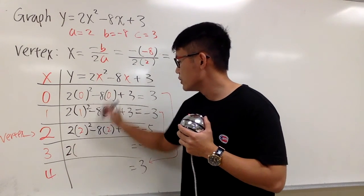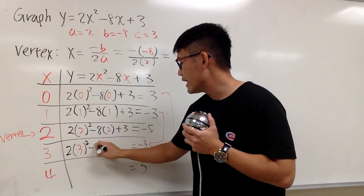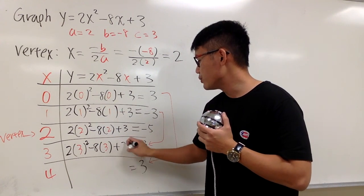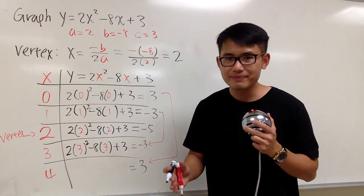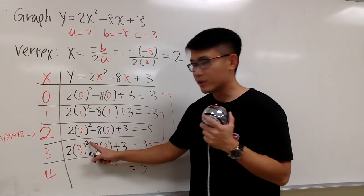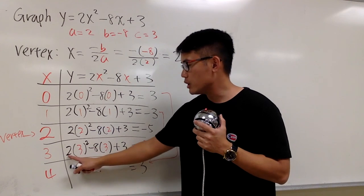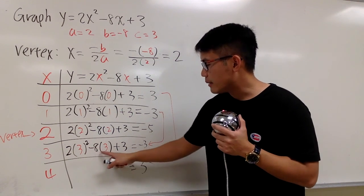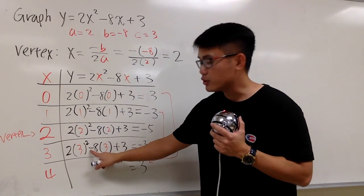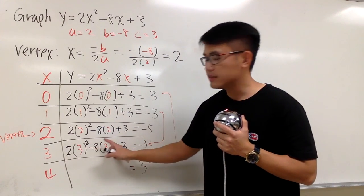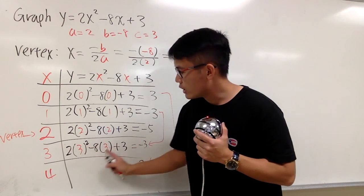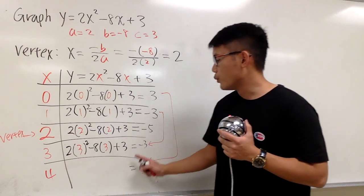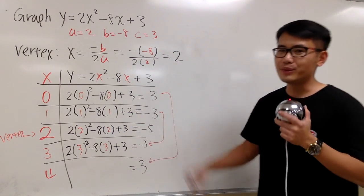So, we have 2 times 3 squared minus 8 times the x, which is 3. And we add 3 to that. And now, let's check this out. Make sure you work out the power first. 3 squared is 9, and then we multiply by 2. So, 2 times 9 is 18. And then, 8 times 3 is 24. But this is subtraction between. 18 minus 24, this right here will give us negative 6. Negative 6 plus 3 will give us negative 3. So, you know we did it right.